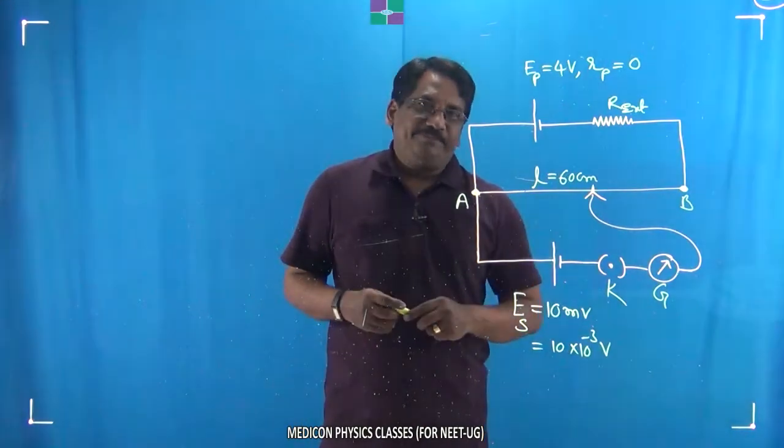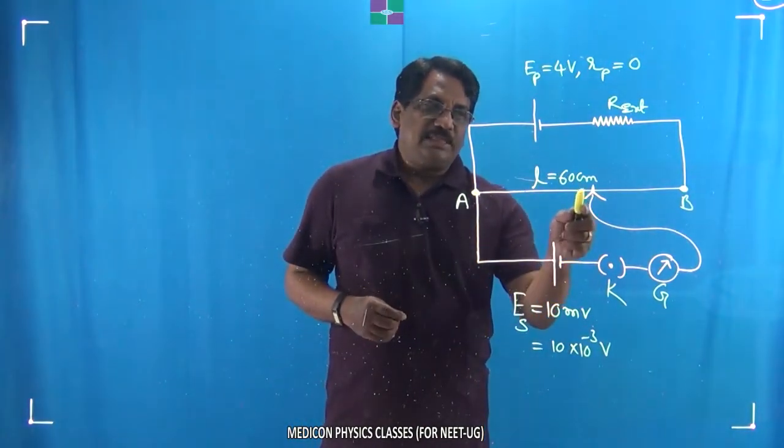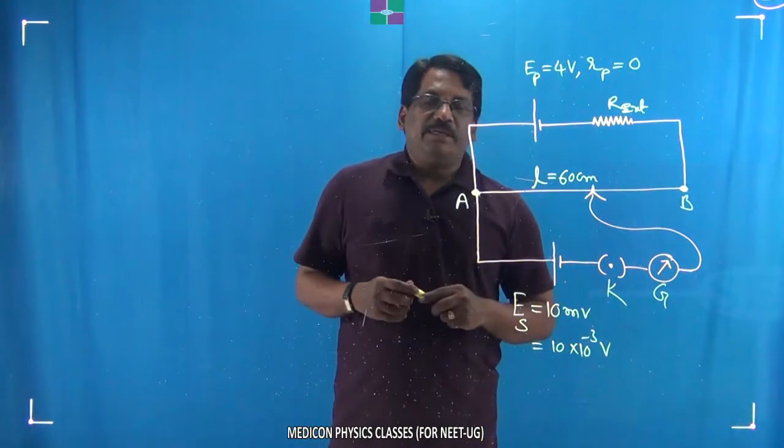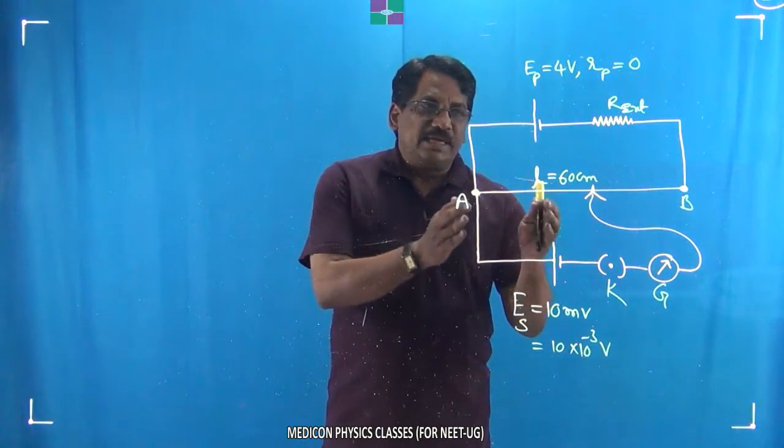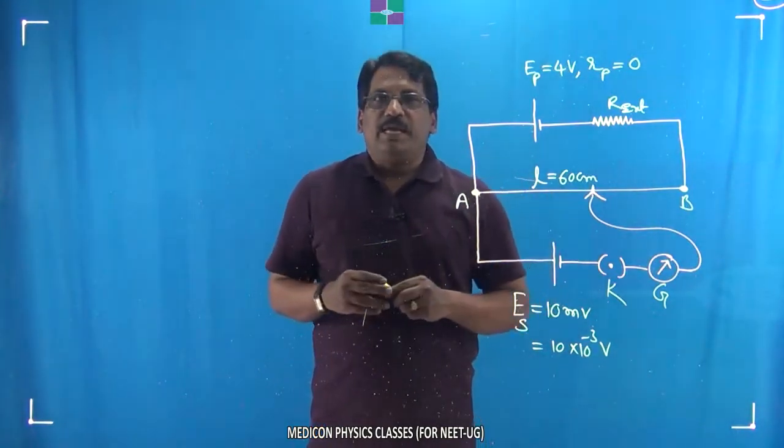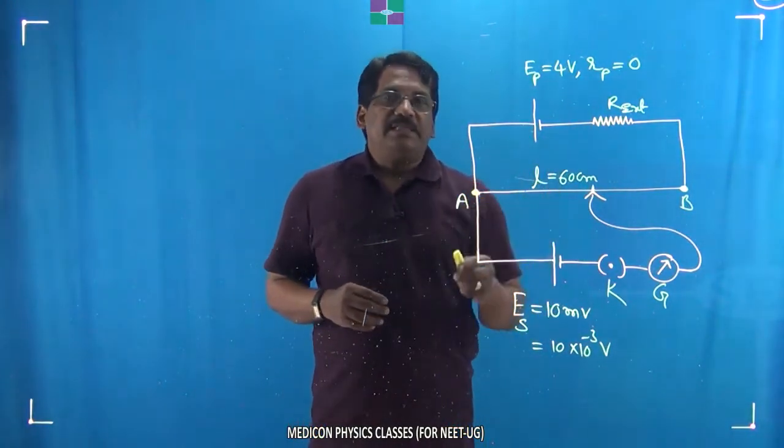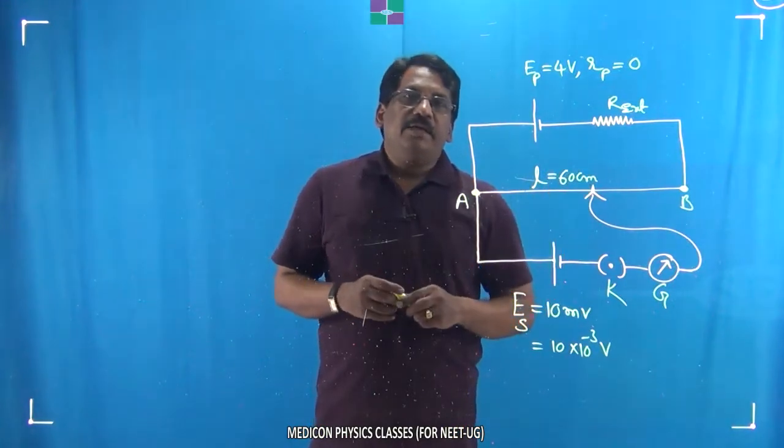of the potentiometer wire. So, for 60 centimeters we find the galvanometer to read zero. When such a condition is satisfied, we are supposed to calculate the external resistance connected in the primary circuit.